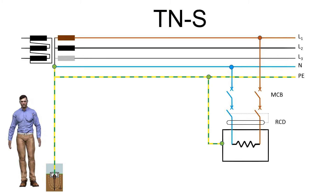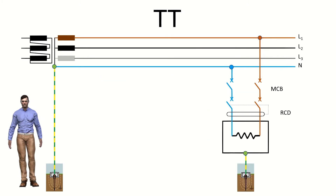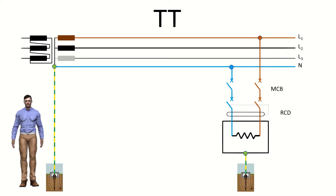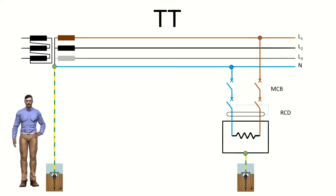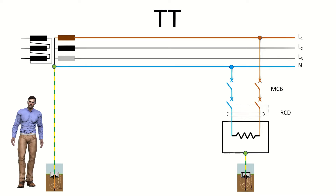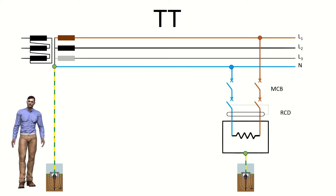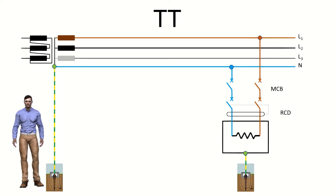In a TT scheme, both the power supply and the masses of the receiving loads are connected to earth directly, but they are different earths — for example, the transformer earth of the transformation center and the ground of our house. These grounds are physically and electrically separated and use different stakes. In this type of scheme we will find two types of protections at a functional level: on the one hand, protections against overcurrents and short circuits, and on the other hand, differential protections. These two protection functions may be physically implemented either in a single element or in two separate elements.